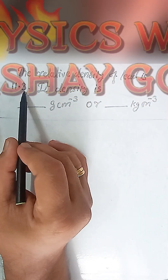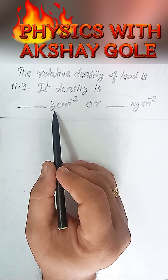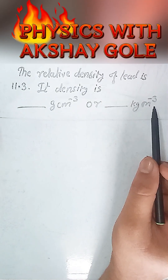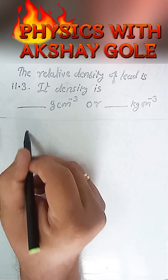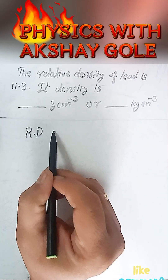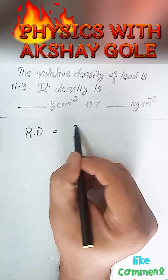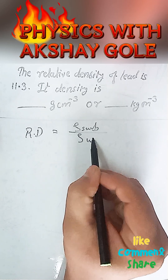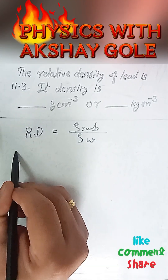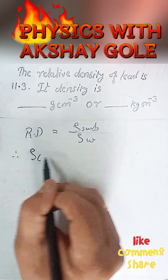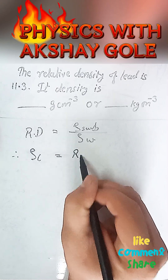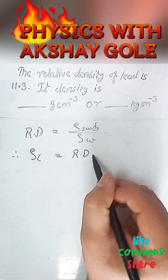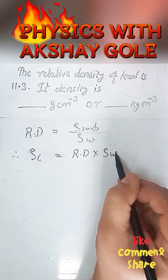The relative density of lead is 11.3. Its density is blank gram per centimeter cube or blank kg per meter cube. We know that relative density can be given as density of a substance divided by density of water. Therefore, density of lead can be given as relative density of lead multiplied by density of water.